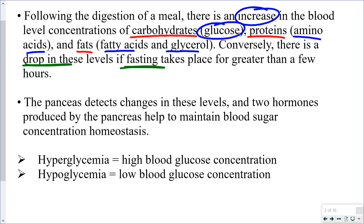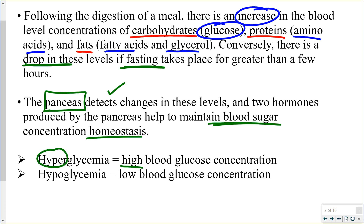It is really glucose that we're going to focus on here. The pancreas is the major organ for glucose homeostasis in your blood. It can measure blood glucose levels — it is the detection organ — and it responds by producing two different hormones to maintain homeostasis. The prefixes hyper means high and hypo means low; neither extreme is good. Blood glucose concentration is measured in millimoles per liter.